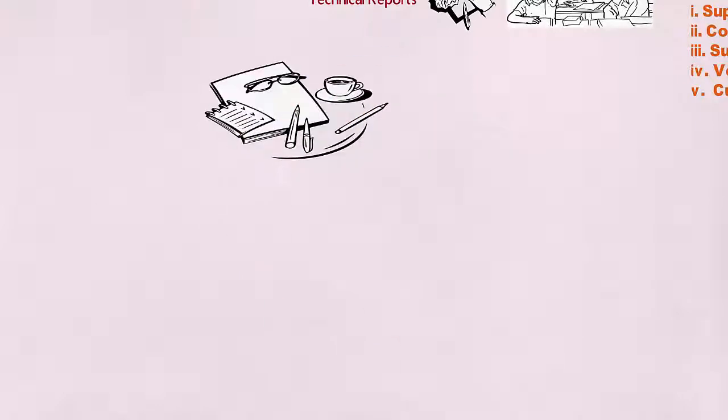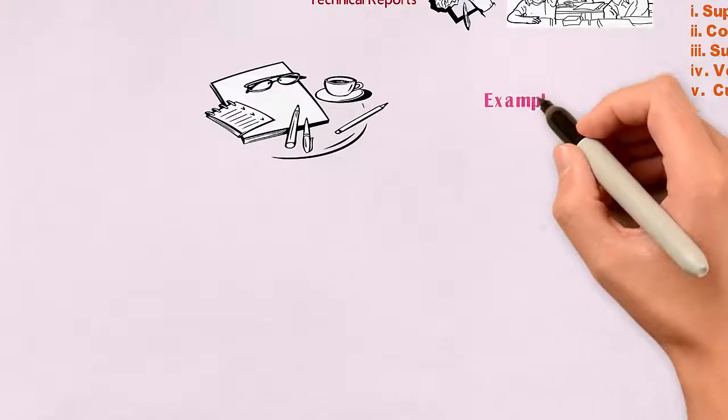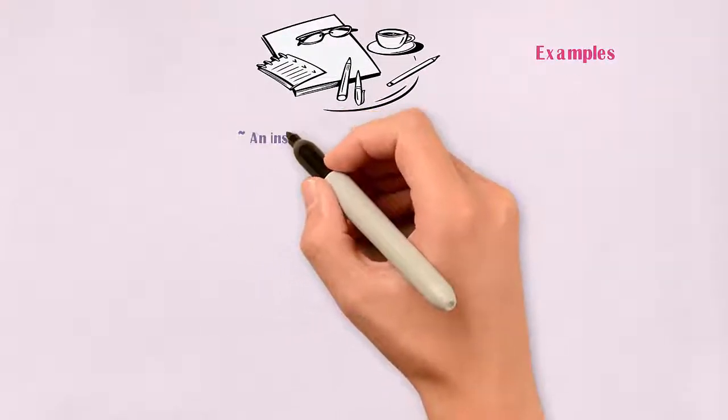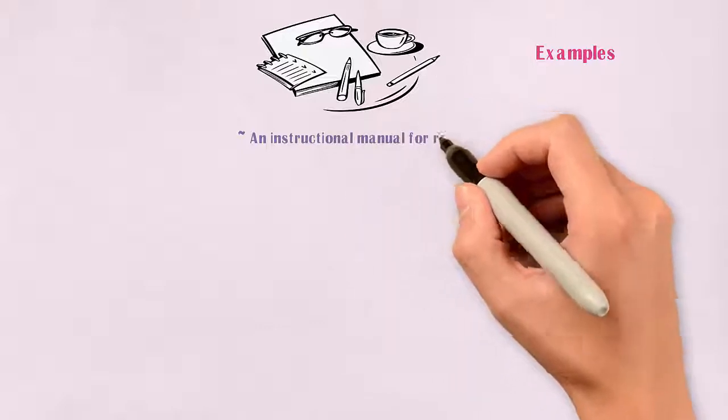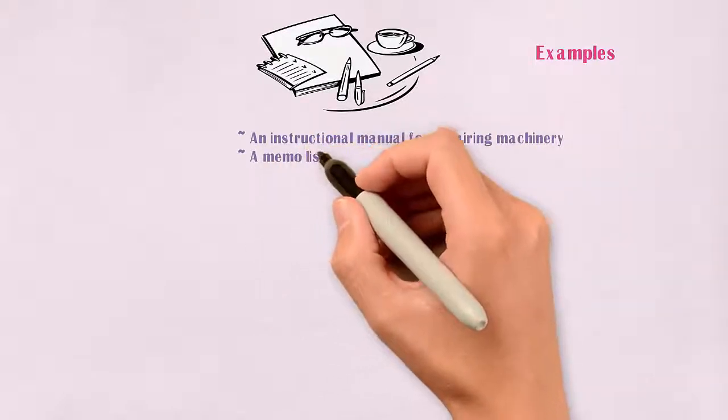Some of the typical examples of technical writing are an instructional manual for repairing machinery, a memo listing meeting agendas.